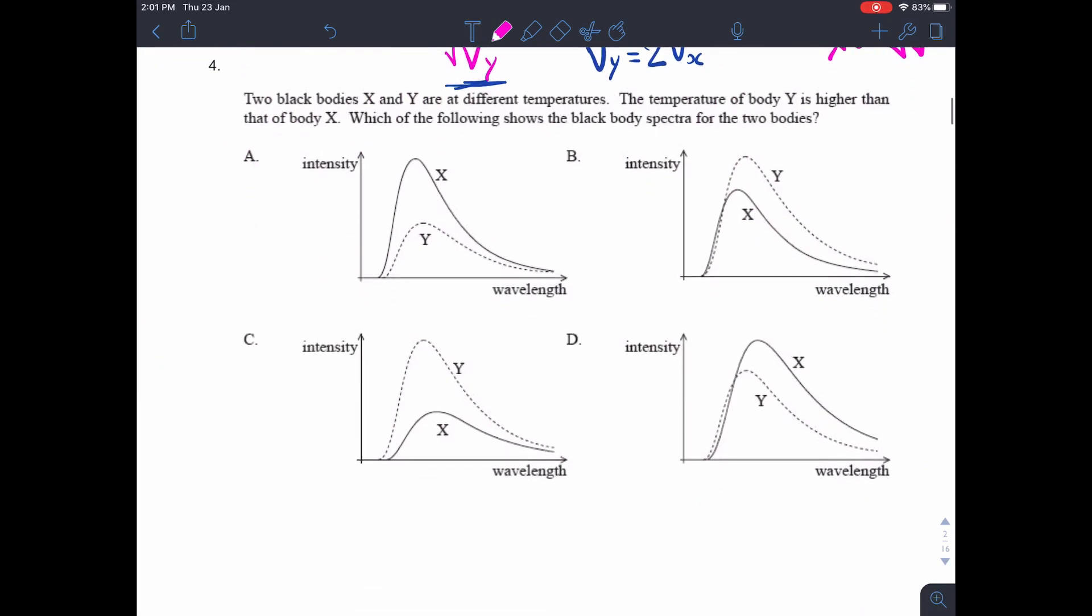Question 4. Two black bodies x and y are at different temperatures, the temperature of body y is higher than that of body x. Which of the following shows the black body spectra for the two bodies? Well, first of all, if the temperature is higher, then the intensity is going to be higher. So y, the peak of y needs to be higher up than the peak of x, which rules out A, and it also rules out D. Also remember that if the temperature of something is higher, then its peak wavelength is shorter. So not only does y need to be higher, like it says here, but it also needs to be to the left. So the only answer that does that is C.